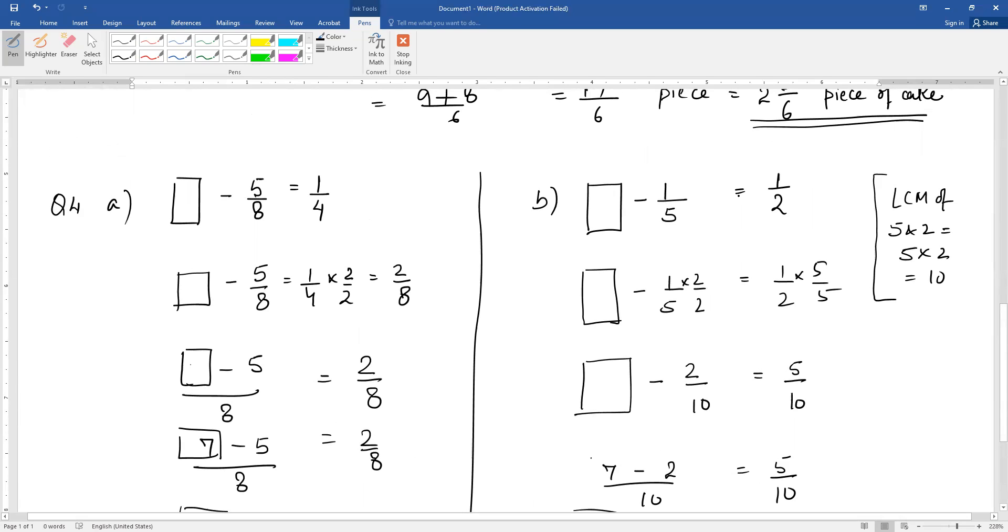Now part b: what minus 1 by 5 gives 1 by 2? We need to find the equivalent fractions. We will multiply in the numerator and denominator to make the equivalent fraction. 1 by 5 becomes 2 by 10.